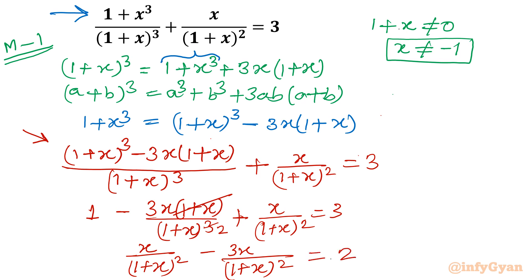The cubic term is gone — the equation comes out as quadratic only. Since the denominators are the same, we combine: −2x/(1 + x)² = 2, or equivalently, −x/(1 + x)² = 1.